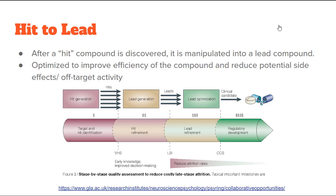After a hit compound is discovered, it's manipulated into a lead compound — this is basically optimization of the compound itself. Now that we know we can synthesize it and it works inside the body, the goal is to improve efficiency, reduce side effects, and minimize off-target activity. We want the compound to work for one specific thing, and preventing it from doing unwanted things inside the body takes time and money.